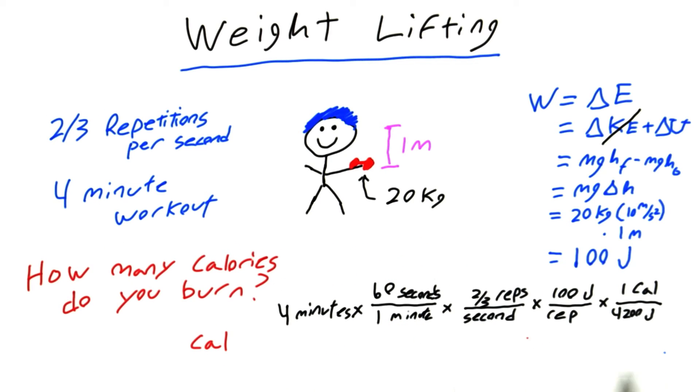I chose to do this next part of the problem using conversion factors. The workout takes four minutes and there's 60 seconds in one minute, so these minutes cancel. And we do 2/3 repetitions per second, so the seconds cancel.